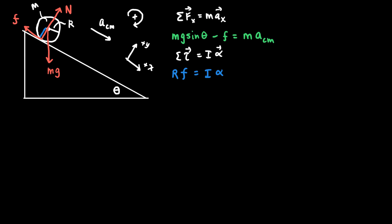The rotational inertia of most objects that roll down inclined planes can be written as B·M·R², where B is some number. For any hollow or solid sphere, a disk, or a hoop, the rotational inertia takes this form. So the torque equation R·F = I·α can be rewritten as R·F = B·M·R²·α.